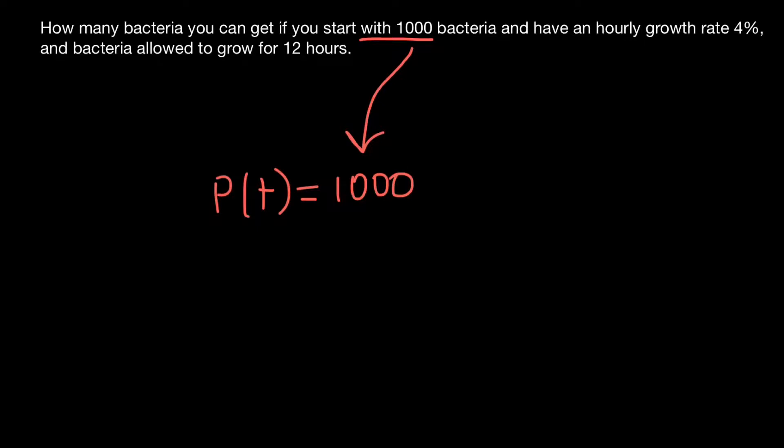So if you start with in a different problem with 100 bacteria or 50 bacteria or 27,000 bacteria, just put this number here. And times 1 plus 0.04. 4% on the scale between 0 and 100 would equal to 0.04 on the scale between 0 and 1.